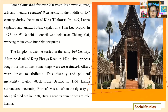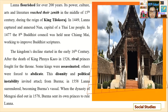Lanna flourished for over 200 years. Its power, culture, arts, and literature reached their zenith in the mid-15th century during the reign of King Tilokarat. In 1449, Lanna captured and annexed Nan, the capital of the Thai Lu people. In 1477, the eighth Buddhist council was held near Chiang Mai, working to improve Buddhist scriptures. The kingdom's decline started in the early 16th century after the death of King Praya Keo in 1526. Rival princes fought for the throne; some kings were assassinated, others were forced to abdicate. This disunity and political instability invited attack from Burma, and in 1558 Lanna surrendered and became Burma's vassal.